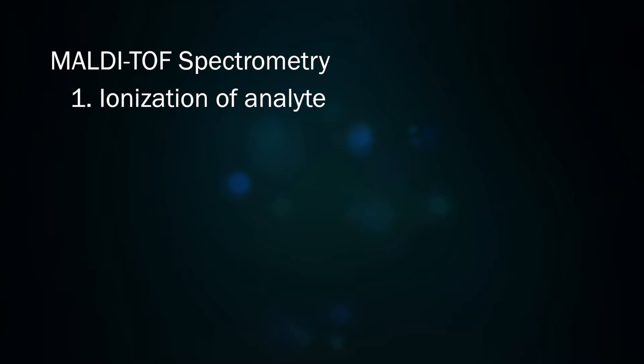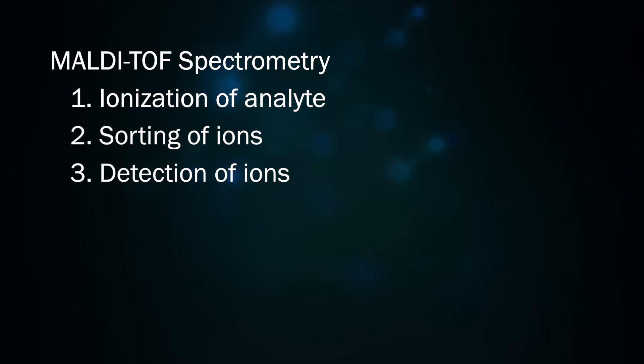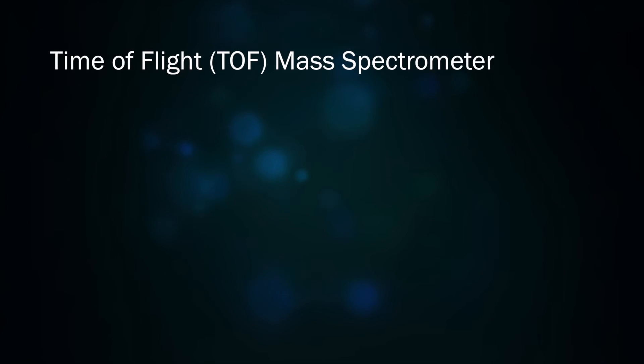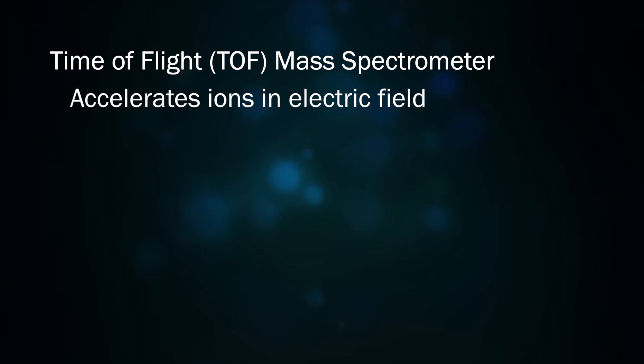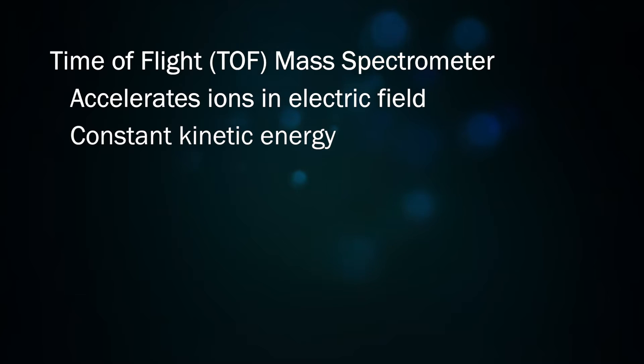Now that the gas phase analyte ions have been generated, their masses can be analyzed by the time-of-flight mass spectrometer. The time-of-flight process accelerates the gas phase ions in a high-voltage electric field. This field imparts a constant amount of kinetic energy on the ions. Because kinetic energy is equal to one-half mass velocity squared, a constant kinetic energy will cause the smallest of the ions to travel the fastest.